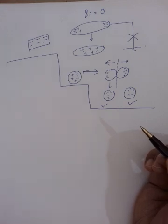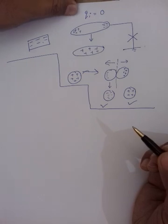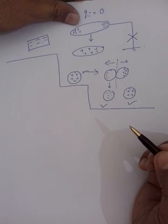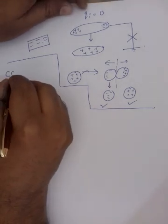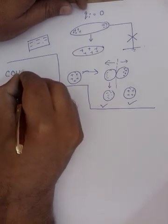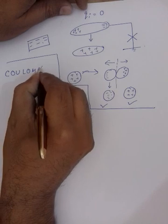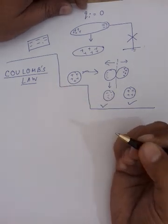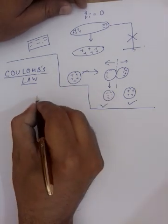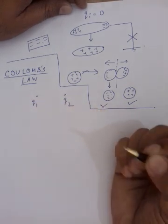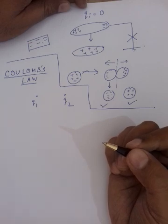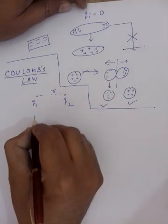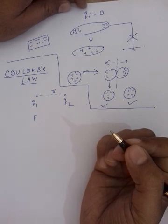Now let me proceed further to the law by which we can calculate force between two point charges — the law is Coulomb's Law. You already know Coulomb's Law from your class 10 syllabus. What Coulomb's Law says is: if two point charges are present — be careful, it should be point charges, not big size objects — say q1 and q2 are separated by distance r, then a force of attraction or repulsion acts between them.